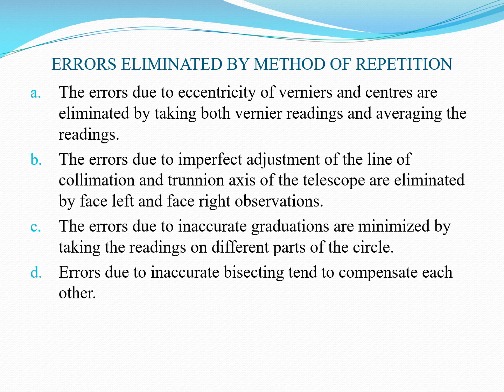The third error is due to inaccurate graduations — these are minimized by taking readings on different parts of the circle. Additionally, errors due to inaccurate bisecting tend to compensate each other when readings are taken on different parts of the circle.